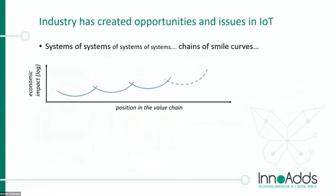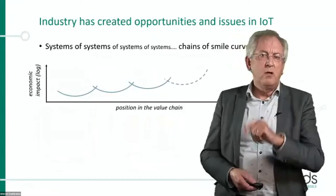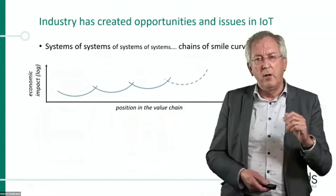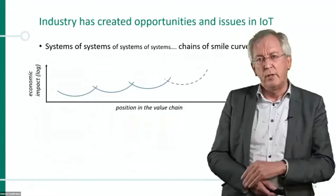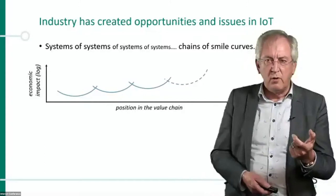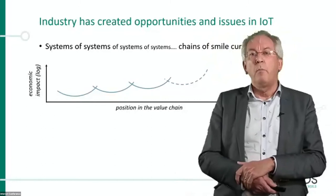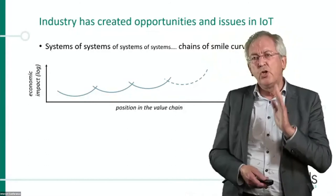If you look at these smile curves, history has repeated itself — it's not a single smile curve. At the crossing of each smile curve, platforms are created and a whole new industry builds on that platform to create new propositions. We have the semiconductor industry, the microprocessor industry, the software industry, the application industry, and the value is going up exponentially. But you have to pick your place in the value chain.